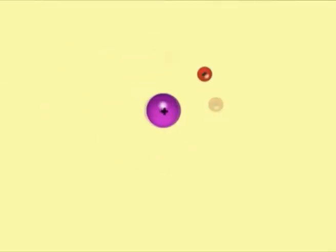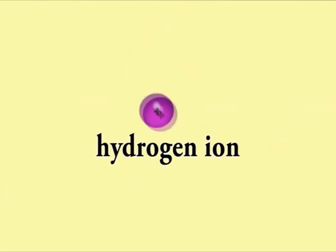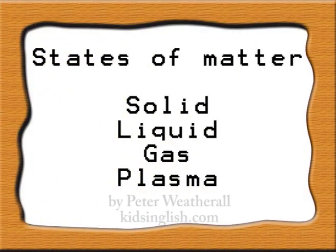The atoms in plasma have so much energy, they begin to break down, losing their electrons and becoming ions. The ions and electrons in plasma move around very freely and are spaced widely apart.